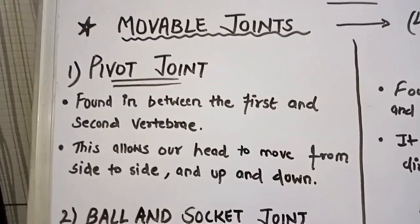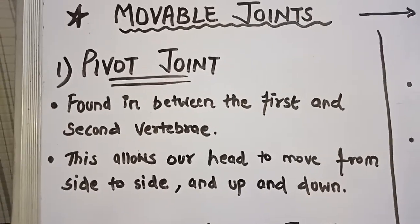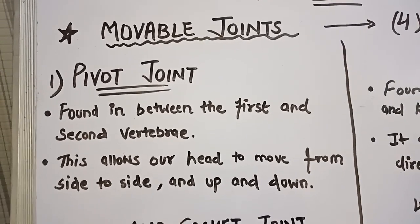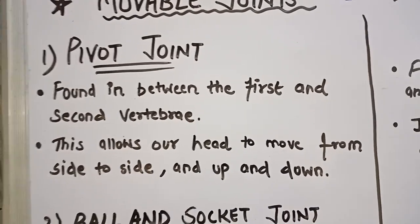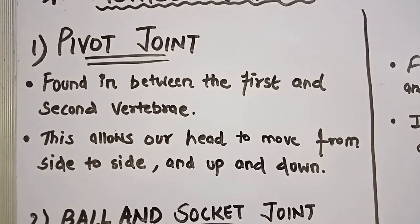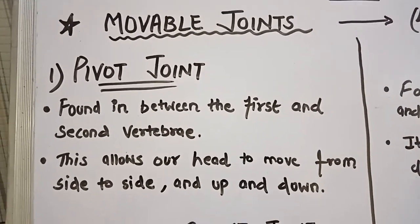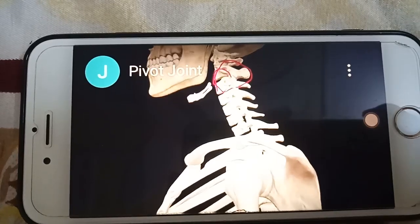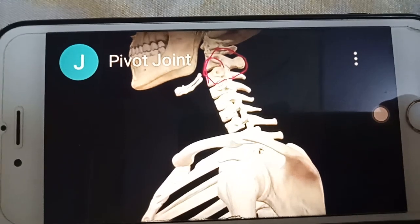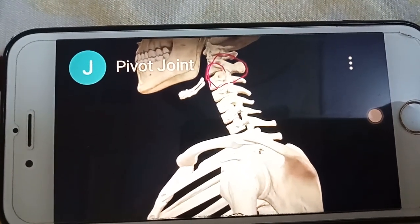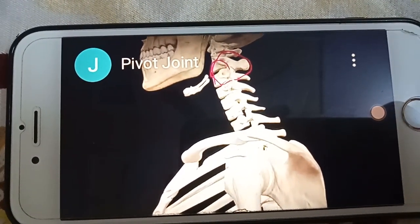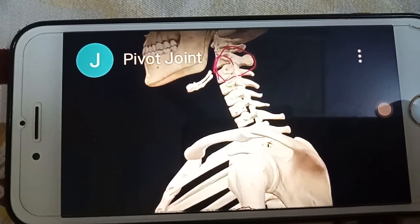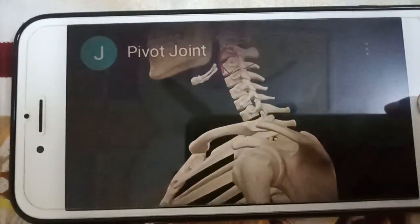First, let's talk about the pivot joint. It is found between the first and second vertebrae. This allows our head to move from side to side and up and down. This area belongs to the pivot joint, which is mainly present between the first and the second vertebrae.